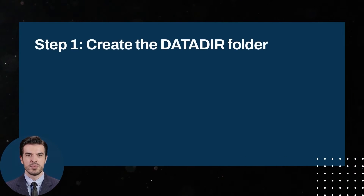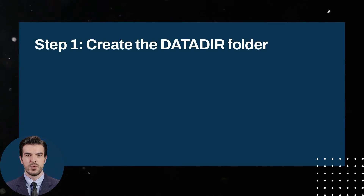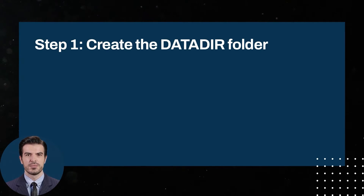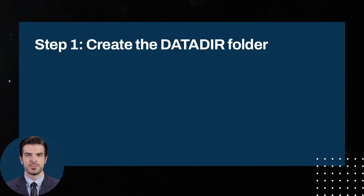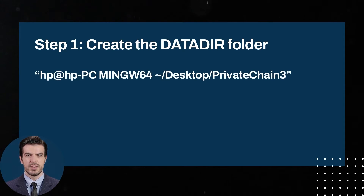Step 1: Create the Datadir folder. When running your own blockchain, it is strongly recommended to use a separate folder for storing data, the database, and the wallet of a private network. This is necessary so that Ethereum private network files do not replace files from the public network. To do this, create an empty folder on your desktop — for example, with the name PrivateEthereum. Right-click on the created folder and select Git Bash here. If everything is okay, the system will show the following.